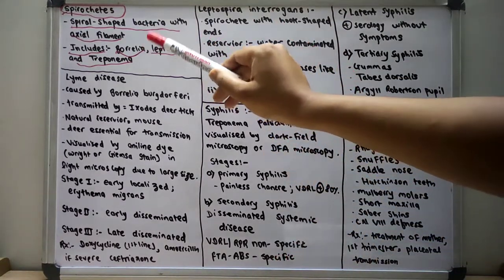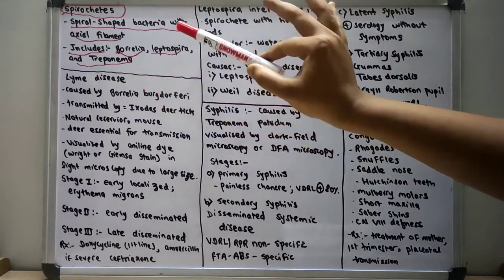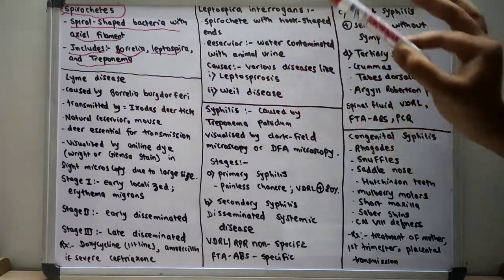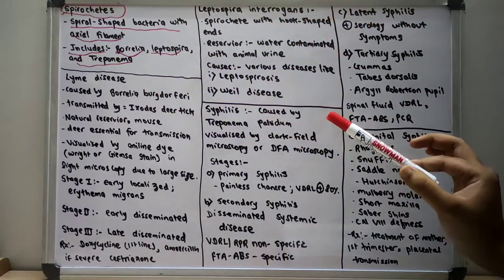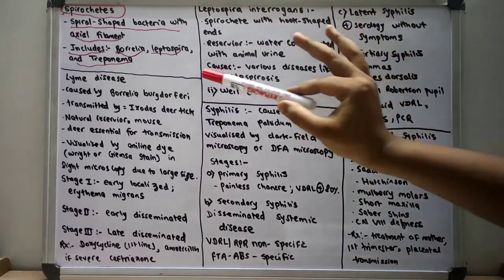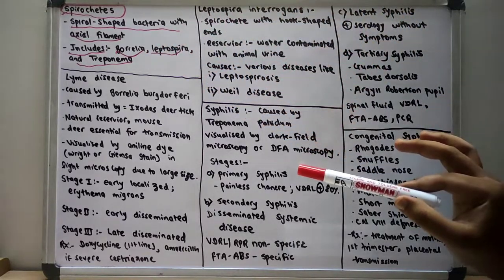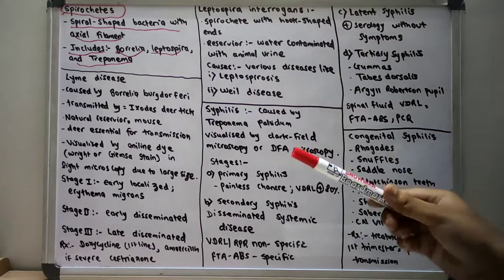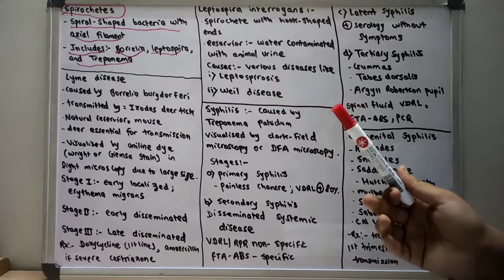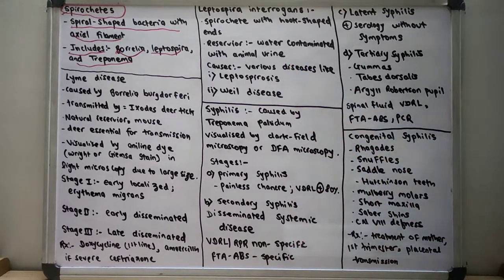Borrelia causes Lyme disease, whereas Leptospira causes leptospirosis and Weil's disease, whereas Treponema — specifically Treponema pallidum — causes syphilis. Now let us discuss each one in detail.